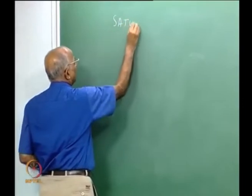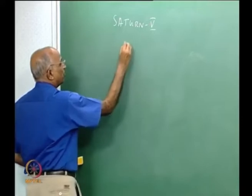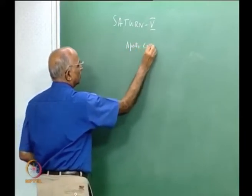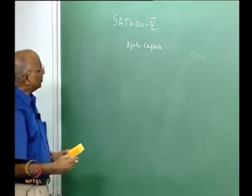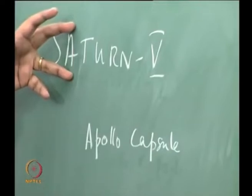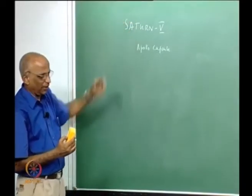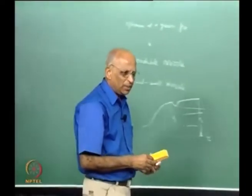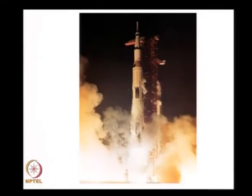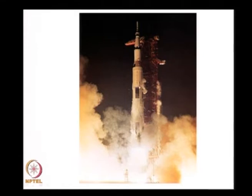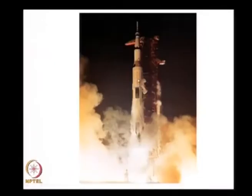The Saturn V launch vehicle carries the Apollo capsule with three men to the Moon. Looking at the vehicle, the first stage consists of five F1 rockets clustered together. Each F1 rocket uses kerosene as fuel and liquid oxygen as oxidizer. The second stage consists of five J2 engines clustered together, and these use liquid hydrogen and liquid oxygen.